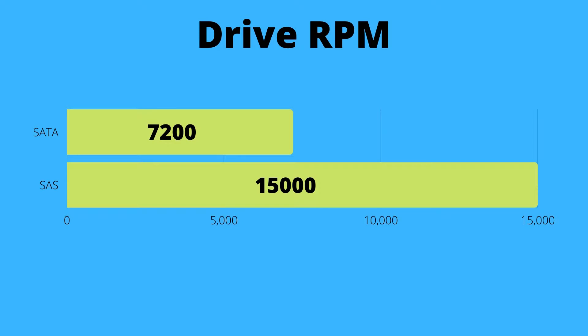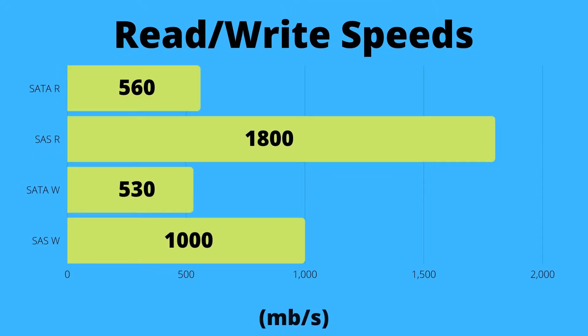With the increased speed also comes increased read and write speeds, which is why SAS will outperform SATA. SATA 3 read speeds can only reach a maximum of 560 megabytes per second, while SAS can reach all the way up to 1,800 megabytes per second. For write speeds, SATA maxes out at 530 megabytes per second compared to SAS at 1,000 megabytes per second — that is quite fast.